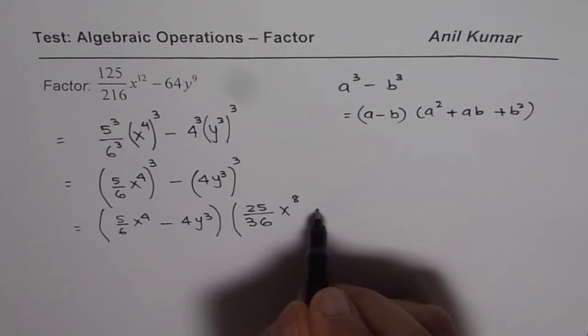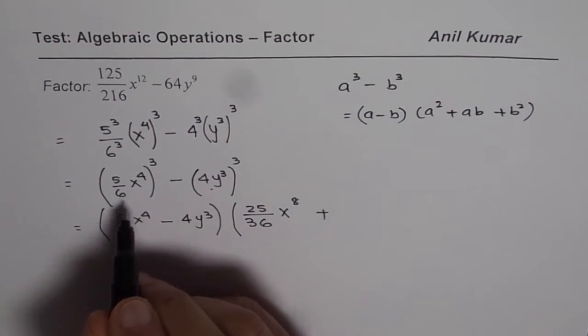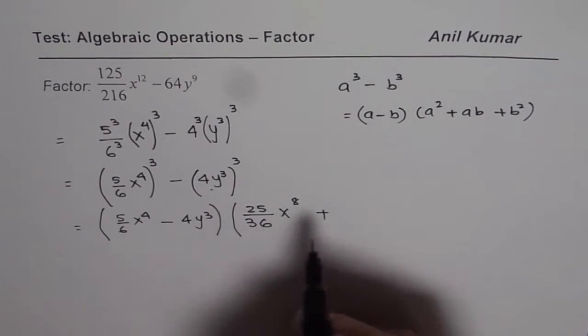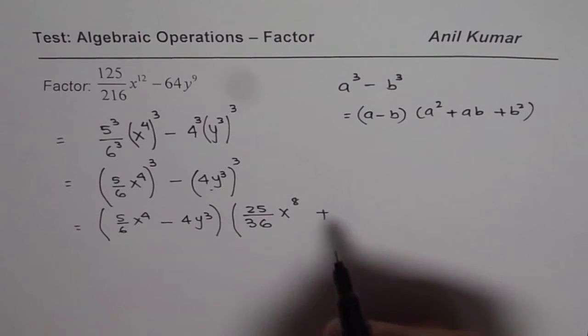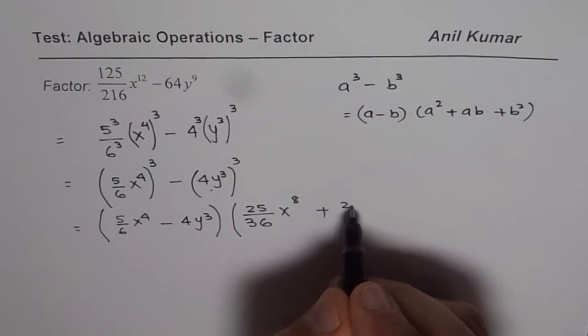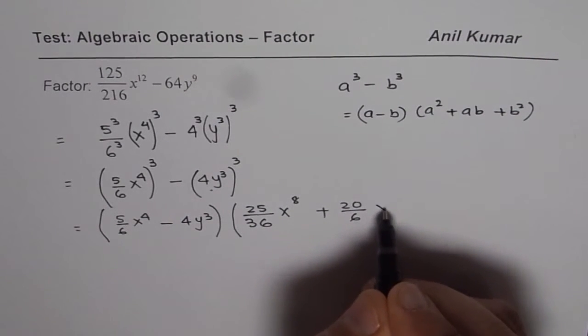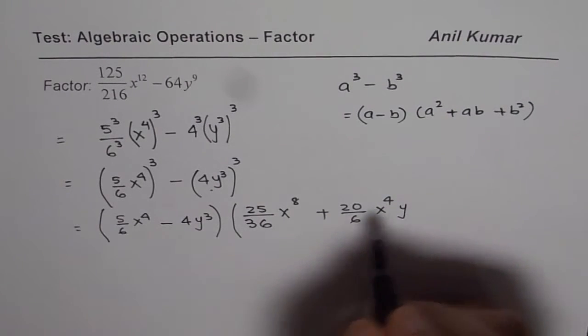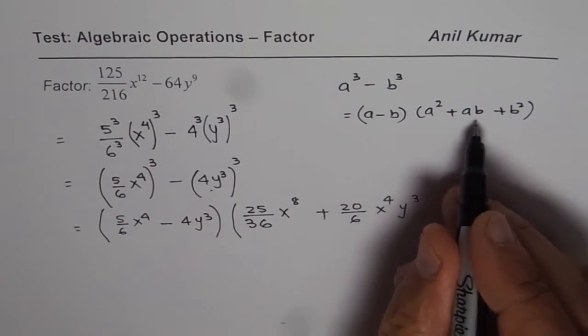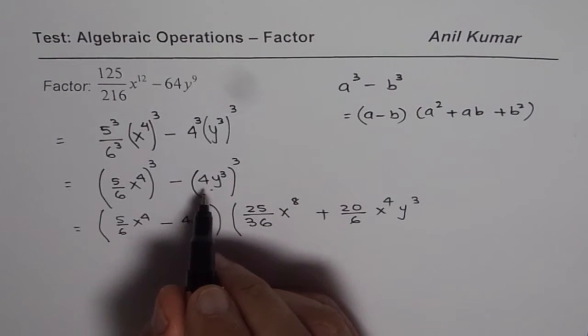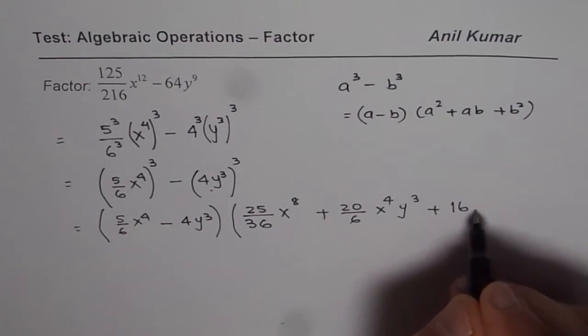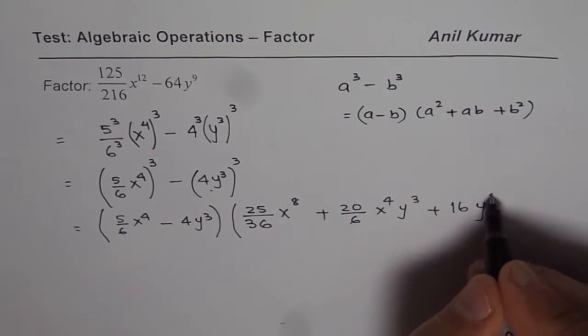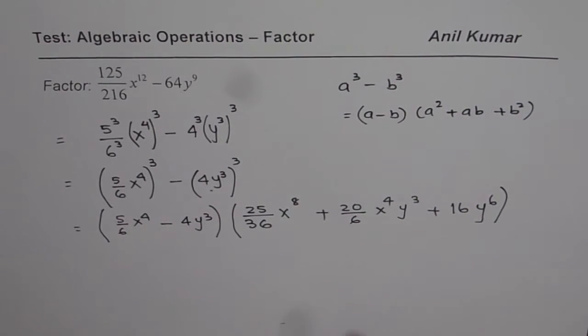So that is a square plus a times b. So 5 times 4 is 20 divided by 6. That could be simplified. So let us write 20 by 6 for now. x to the power of 4, y cube. So just multiply a and b. And then b square plus 4 square is 16. And y cube square will give us y to the power of 6.